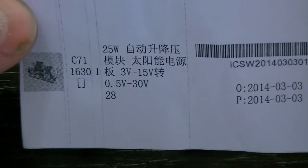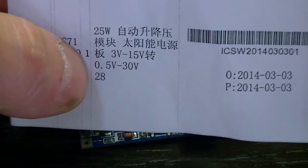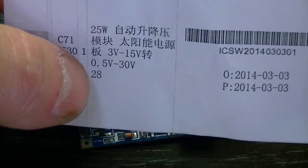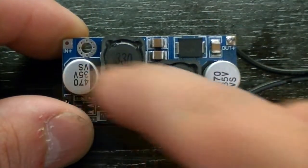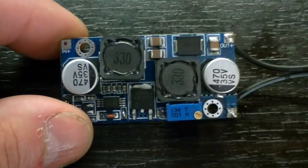But as it says, it takes 3 volts to 15 volt input, 0.5 to 30 volt output, 25 watts max. And I have no clue what the 28 is for. But on the board itself, basically we got an input and output capacitor, two different inductors, probably one for buck, one for boost.